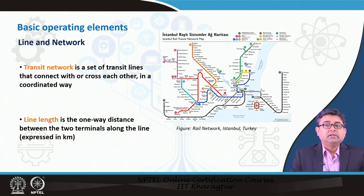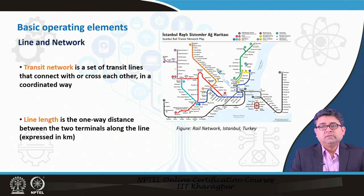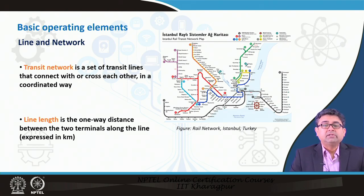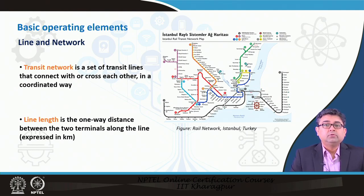All of these lines collectively represent a transit network. The next terminology to remember is line length. When we have many transit lines, we need to know the length of a particular line. Line length is defined as the one-way distance between the two terminals along the line, usually expressed in kilometers or miles. Looking at the map, the black line runs from a westernmost point to an easternmost point, and the line length is measured between those two terminals.